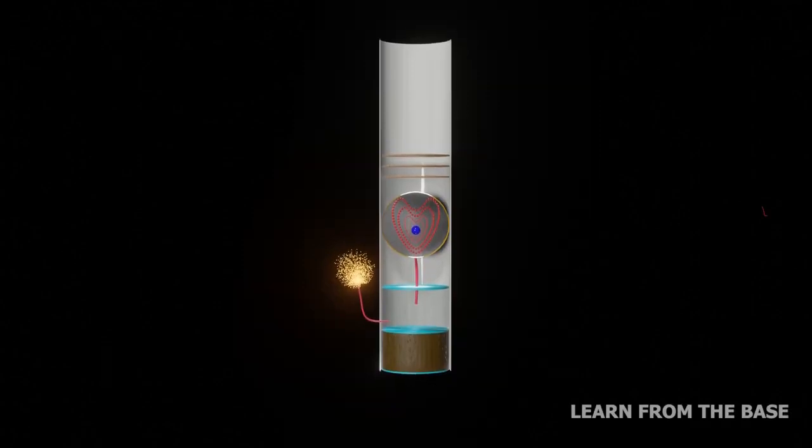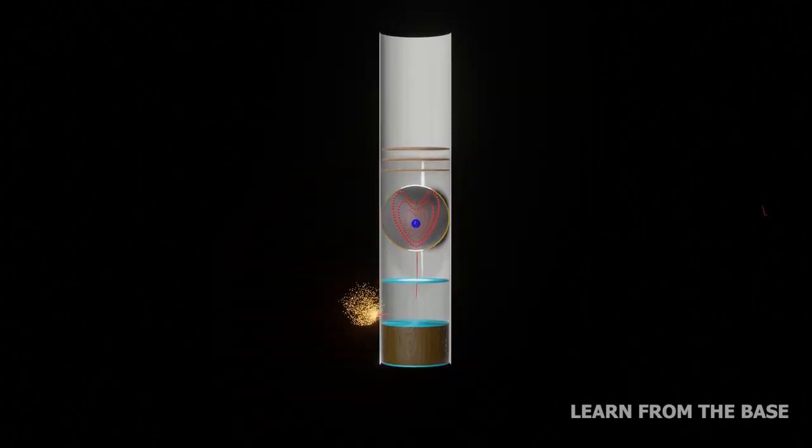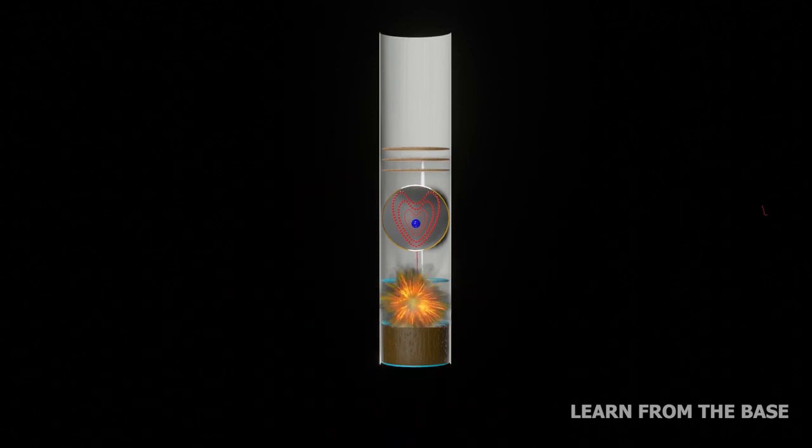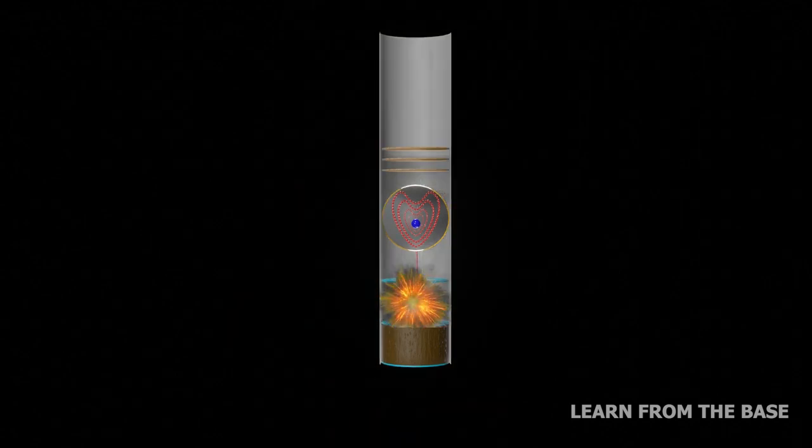Let's take a closer look at what actually happens after the ignition. The main fuse lights the lift charge. The result of ignition of lift charge generates heat and gas. The trapped heat and gas will push vigorously at the inside of the launch tube until an explosion results.